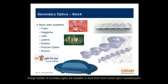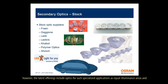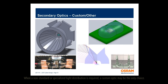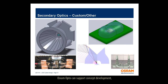A large number of secondary optics are available as stock items from various optics manufacturers. Historically, these optics typically create circular beam patterns of differing half angles. However, the latest offerings include optics for specialized applications such as equal illuminance areas and street light beam patterns. Osram Opto's LED Light4U partners stock many optics for high power SSL LEDs and can also design and manufacture custom optics. When a non-standard or specialized light distribution is required, a custom optic may be the only choice.